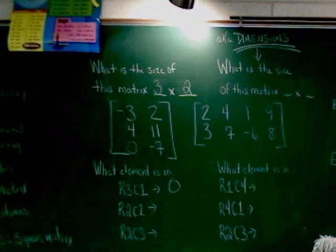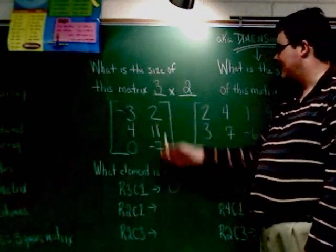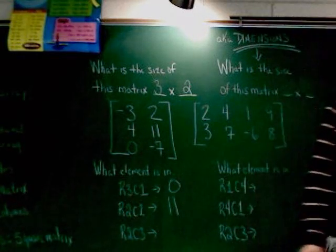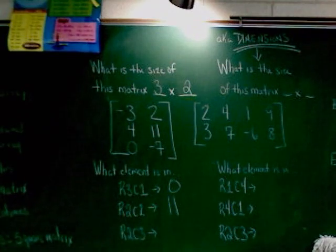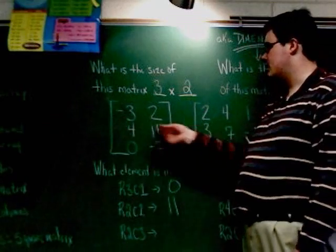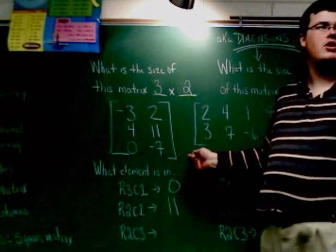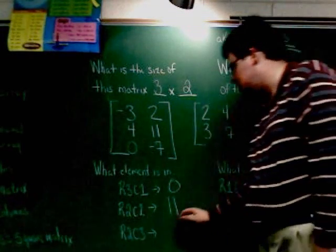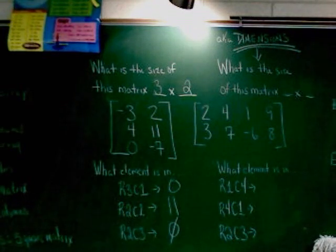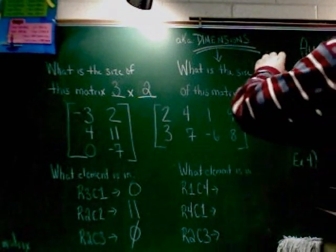All right. Now in R2C2, second row, so on 4 and 11, second column, they meet at 11. So that's 11. R2C3, second row, third column. First row, second row. So again, 4 and 11. 1, 2, as you can see, there is no third column. So for this one, it happens to be no solution.